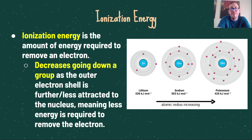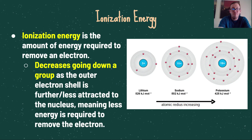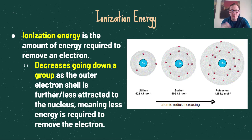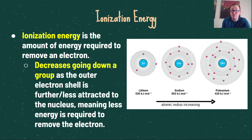Ionization energy is simply the amount of energy required to remove an electron. We are going to look at each of these periodic trends going up and down a group as well as going from left to right on the periodic table. Ionization energy decreases as we go down a group, because the outer electron shell is further away from the nucleus as we increase energy levels. That electron, being further away, is less attracted to the nucleus due to Coulomb's Law, meaning less energy is required to remove it.